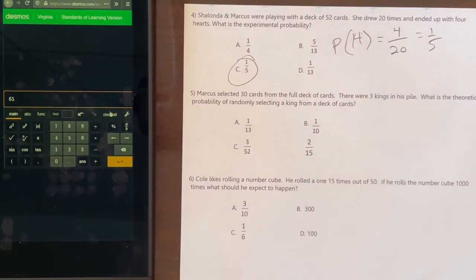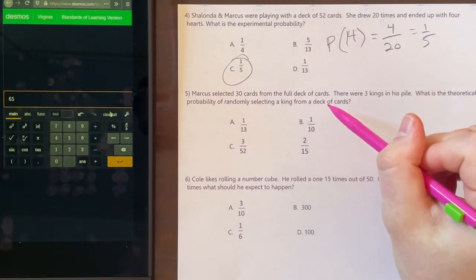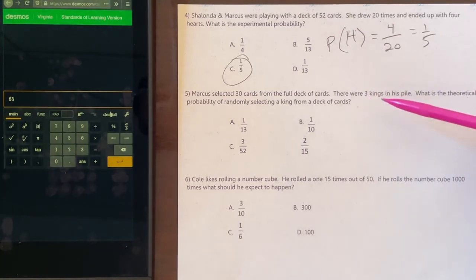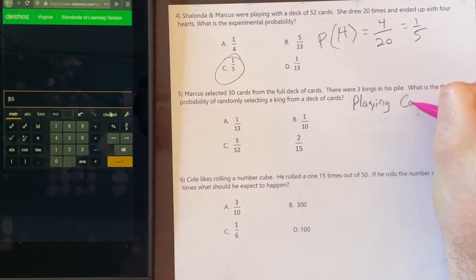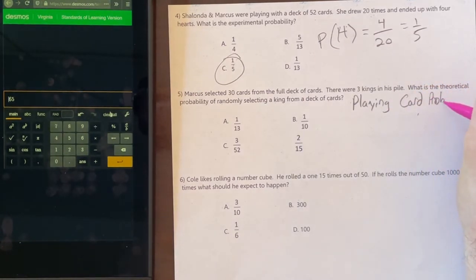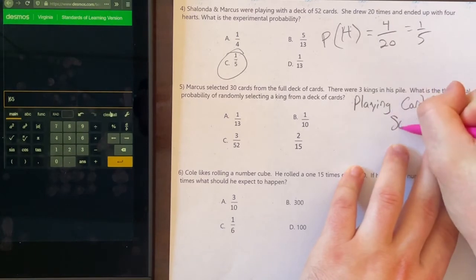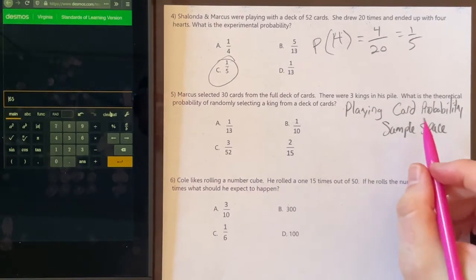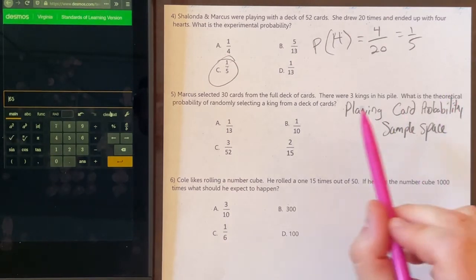For number 5, it says Marcus selected 30 cards from a full deck. There were 3 kings in his pile. What is the theoretical probability of randomly selecting a king from a deck of cards? Usually they don't have cards or the card games in there. But if you need to, I highly recommend playing card probability sample space. That way, it is easier to see what it looks like. There's 4 suits. And then each suit has 13 cards for it.